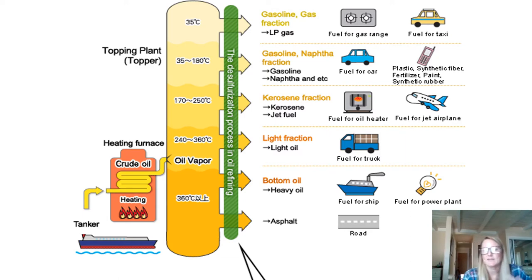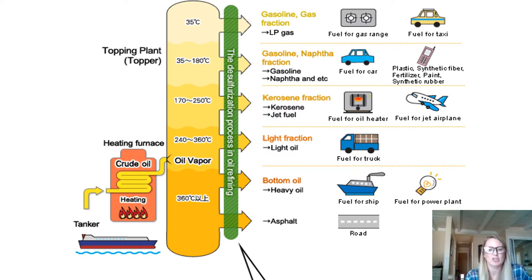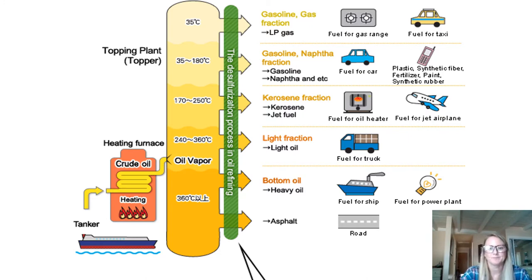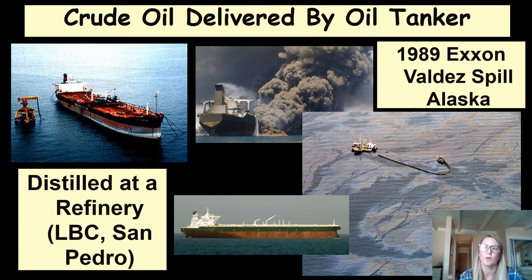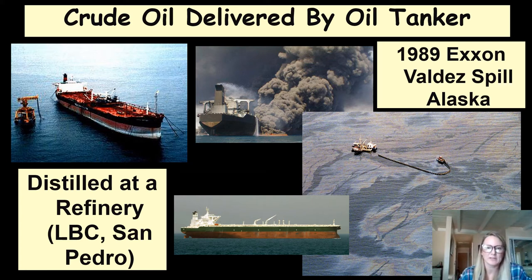Gasoline tends to be the lightest and is used as fuel. At the bottom you have the heavier hydrocarbon chains that are used for things like asphalt, and then of course all the other various products made from crude oil. Once you pump out the oil from the ground, you usually have to deliver it to a refinery. The refineries and the drilling locations aren't necessarily in the same place, so you usually have to deliver the crude oil by oil tankers.